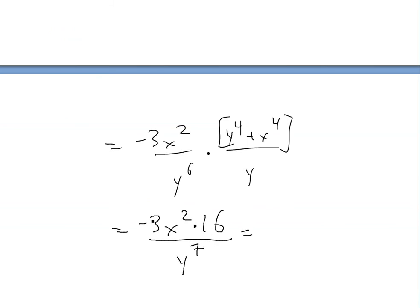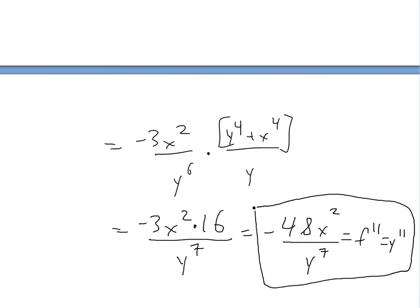And this 16 times 3, that is going to be... what is it... 16 times 2 is 32, add another 16, negative 48x^2 over y^7. And this equals f'', or y'', so anyways that's the same thing. So this is our second derivative right here.